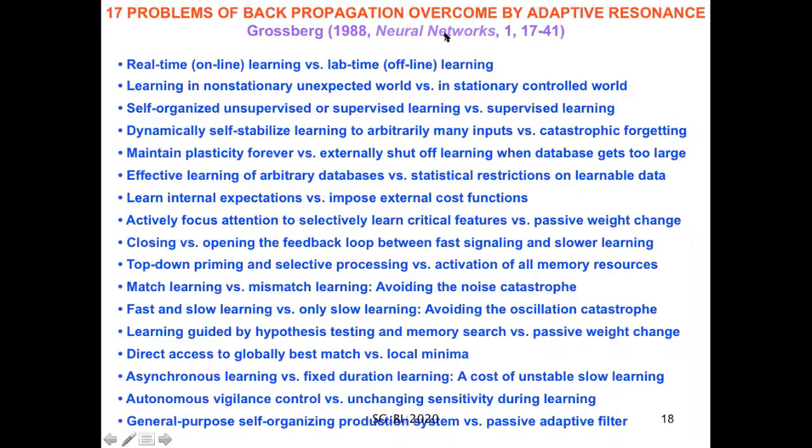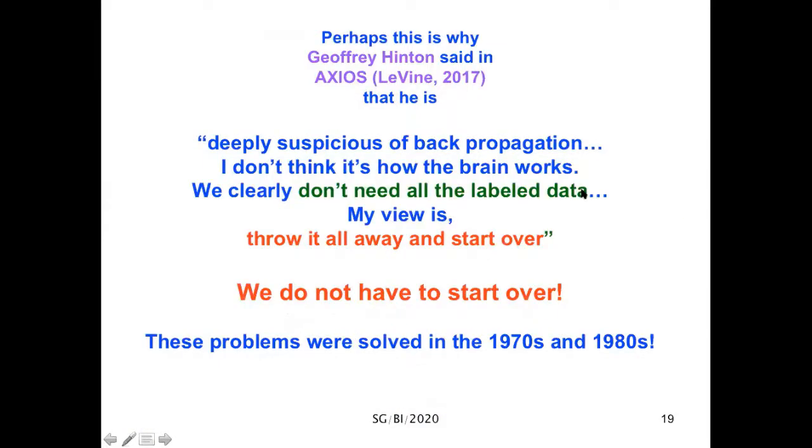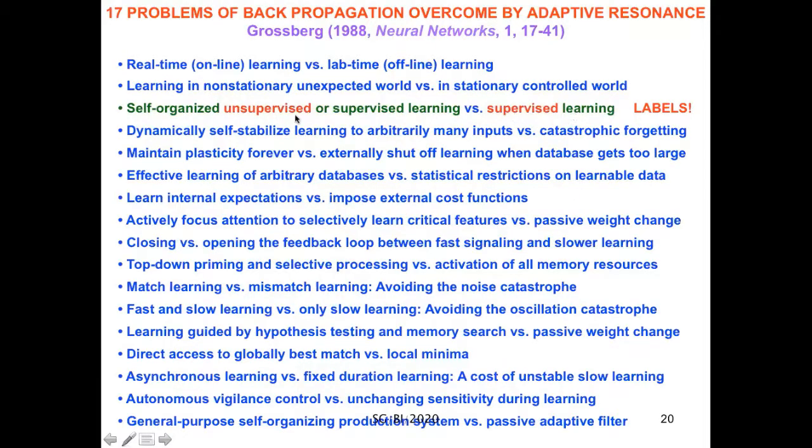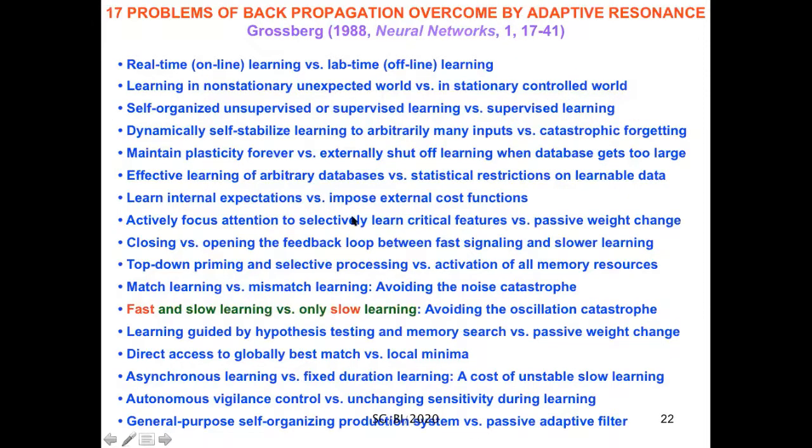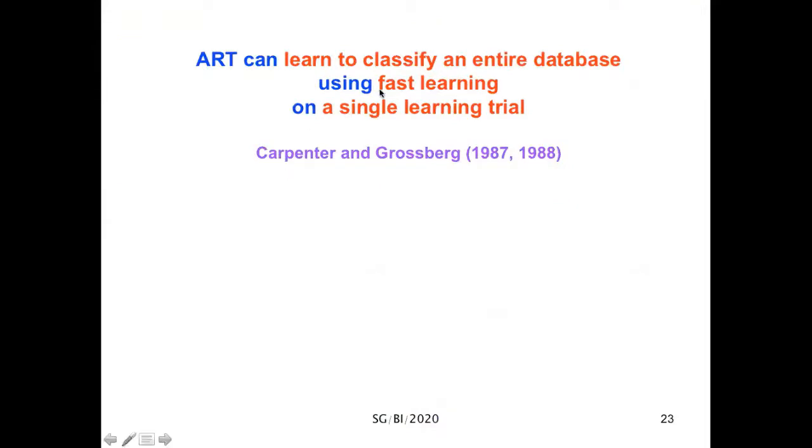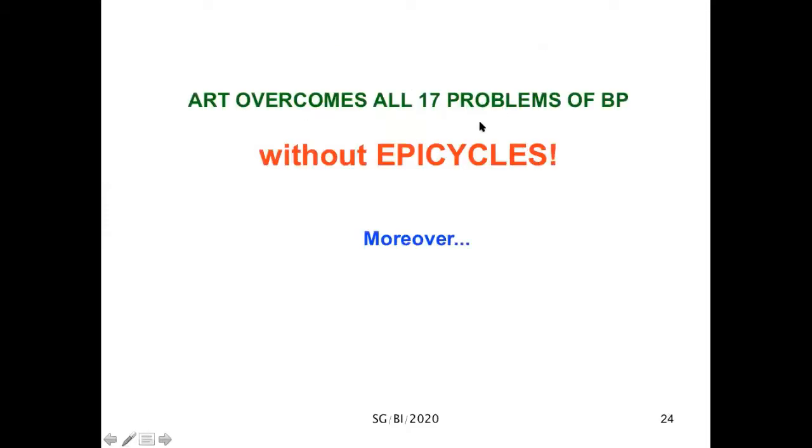In fact, in my paper in 1988 in the first issue of the journal Neural Networks, I listed 17 problems of backpropagation that were overcome by adaptive resonance. And here's that list. If you think about we don't need all the labeled data, the third item in that list was that adaptive resonance or ART can overcome that problem using unsupervised learning. As to the problem of slow learning, that's overcome because ART can run with fast learning or slow learning as you wish. In particular, ART can learn to classify an entire database using fast learning on a single learning trial, as Gail Carpenter and I showed in the 1980s.